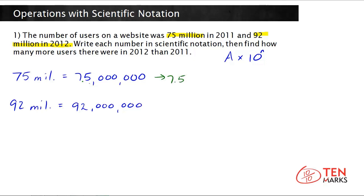Now count how many places the decimal point needs to move to the right — that's your power of 10. It needs to move 1, 2, 3, 4, 5, 6, 7 places. So the power of 10 is 10 to the 7. Do the same thing for 92 million: put the decimal point after the first non-zero digit, which is the 9. Your factor becomes 9.2.